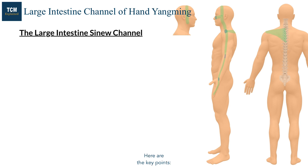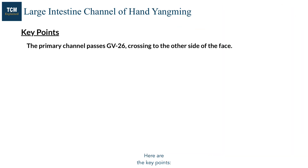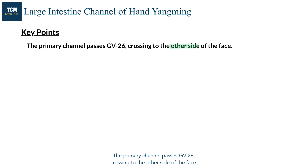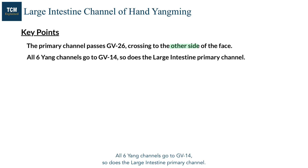Here are the key points. The primary channel passes GV26, crossing to the other side of the face — it is the only channel that crosses the midline of the body. All 6 Yang channels go to GV14, and so does the large intestine primary channel.